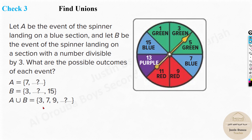Now here we have a similar problem, but it's union instead of intersection. Please try this by pausing the video. A is spinner landing on blue: {7, 15}. B is numbers divisible by 3: {3, 9, 15}. For the union, we write all terms in ascending order, writing intersecting numbers only once. So A union B = {3, 7, 9, 15}.